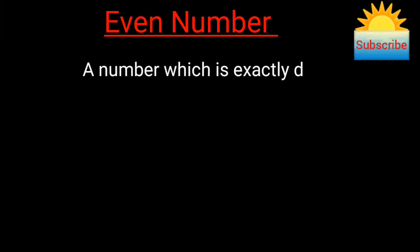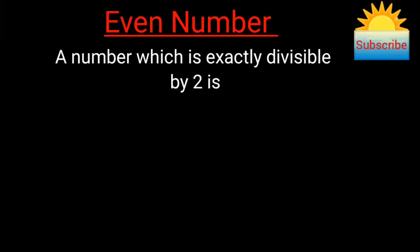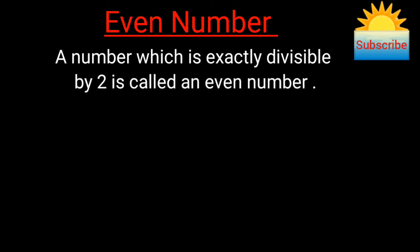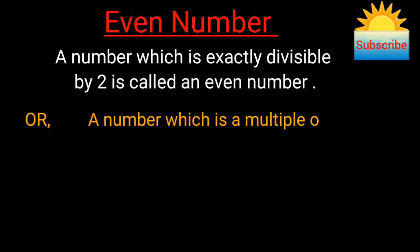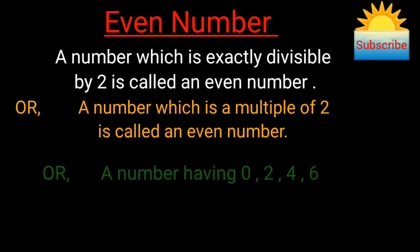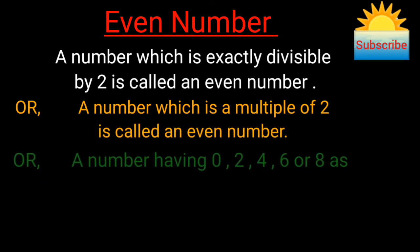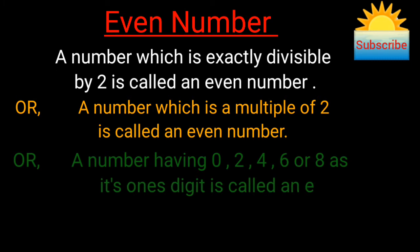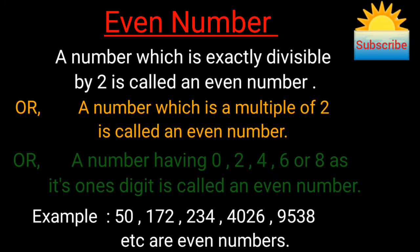A number which is exactly divisible by two is called an even number. A number which is a multiple of two is called an even number. A number having zero, two, four, six, or eight as its one's digit is called an even number. For example, 50, 100, 72, 234, 4026, 9538, etc. are even numbers.